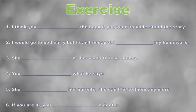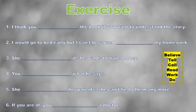Now let's practice. We have the first exercise about obligations for the future. There are six sentences to complete with the right verb. They are all obligations for the future, and the verbs to use are: believe, tell, call, read, work, and do.